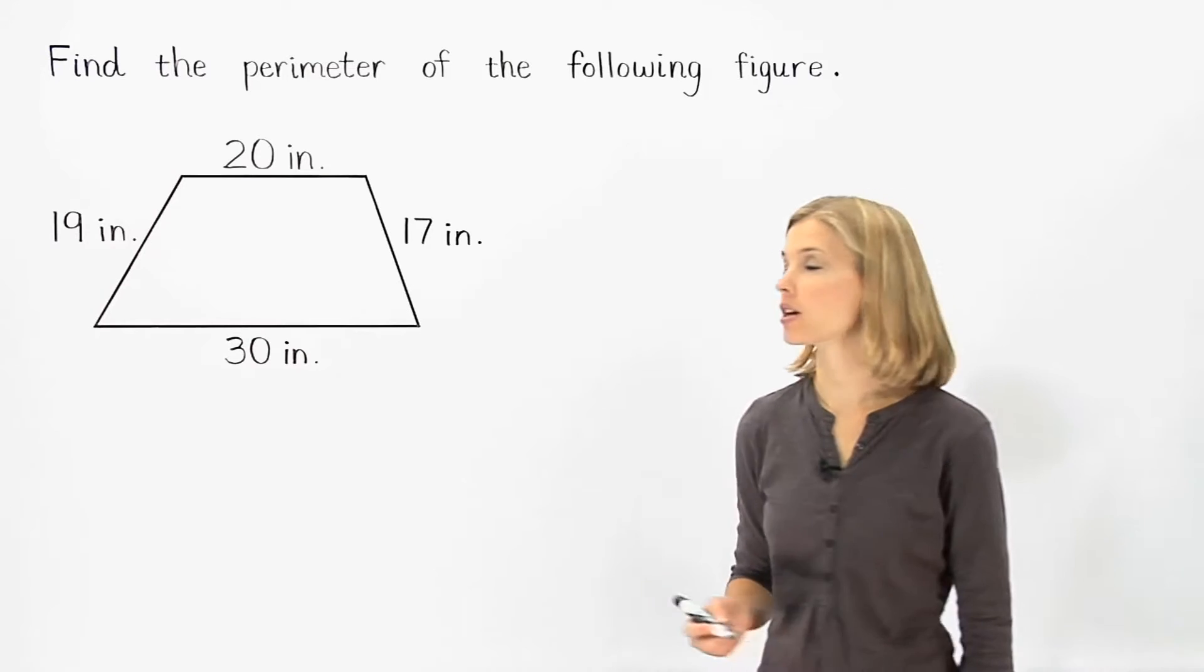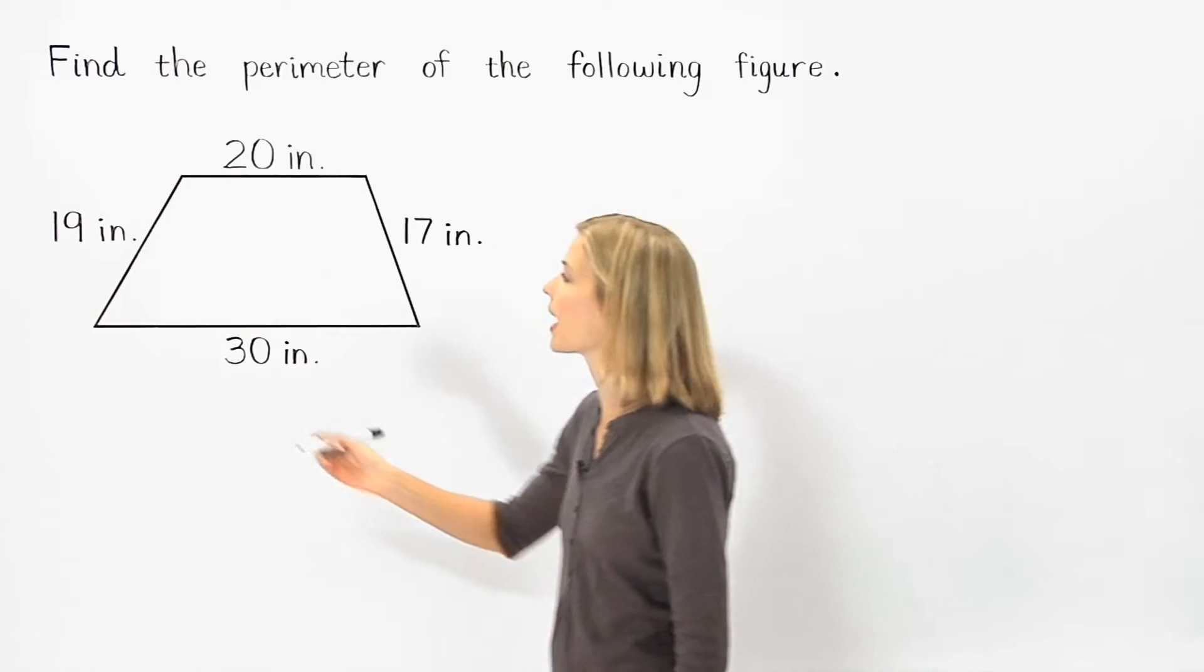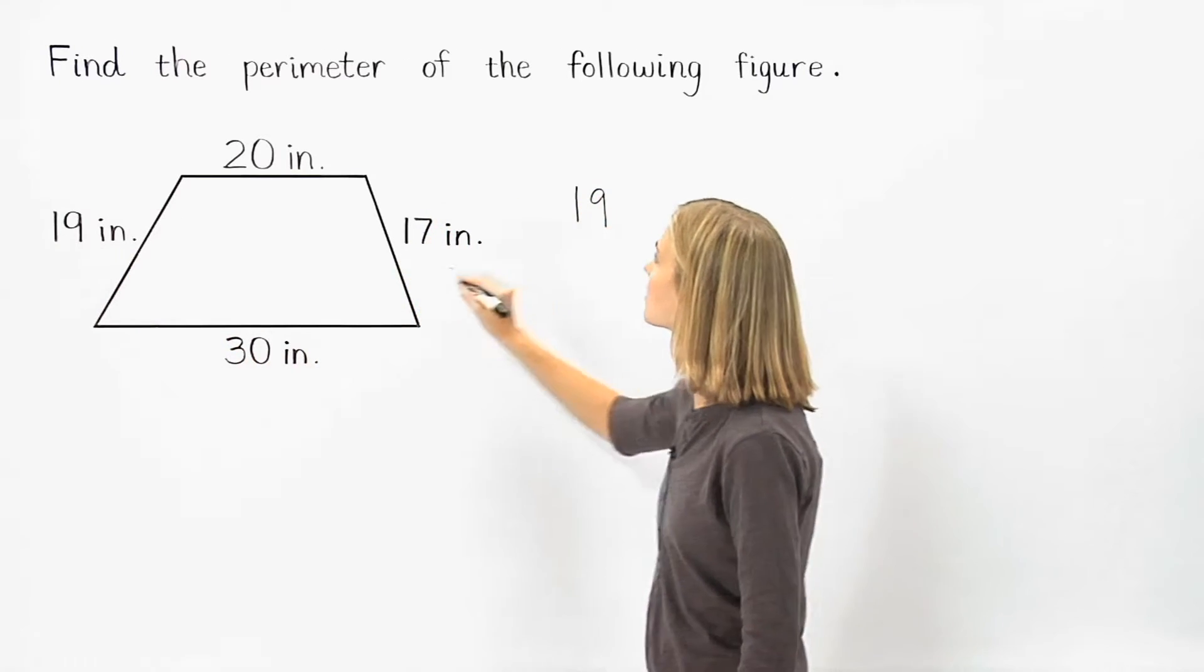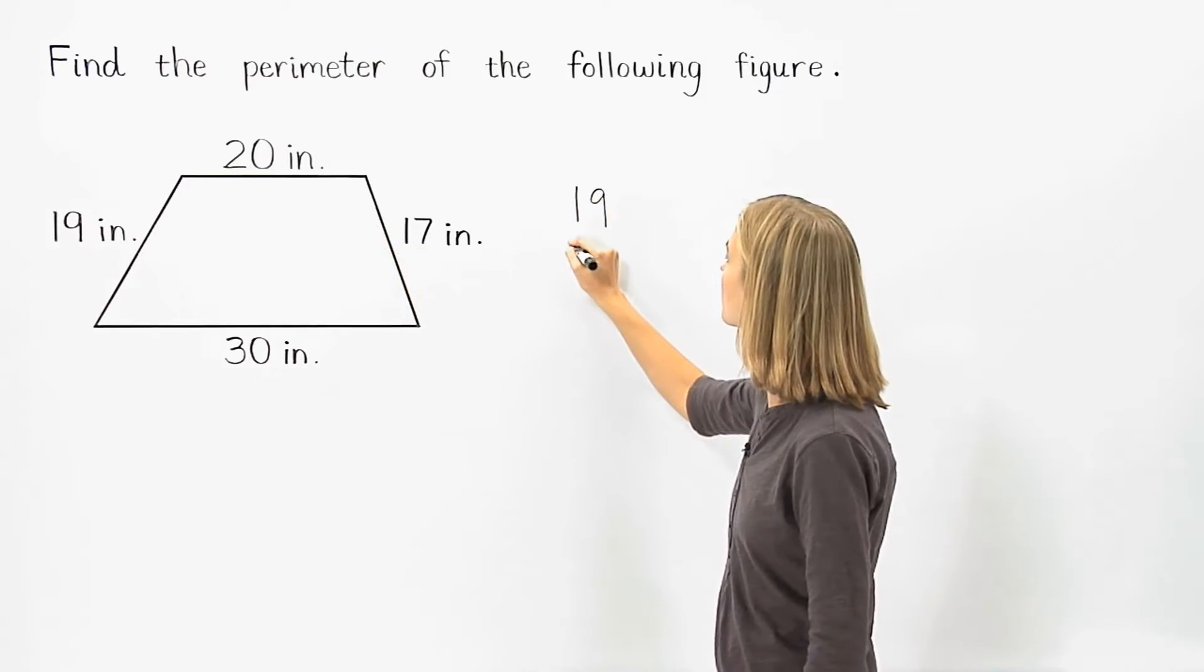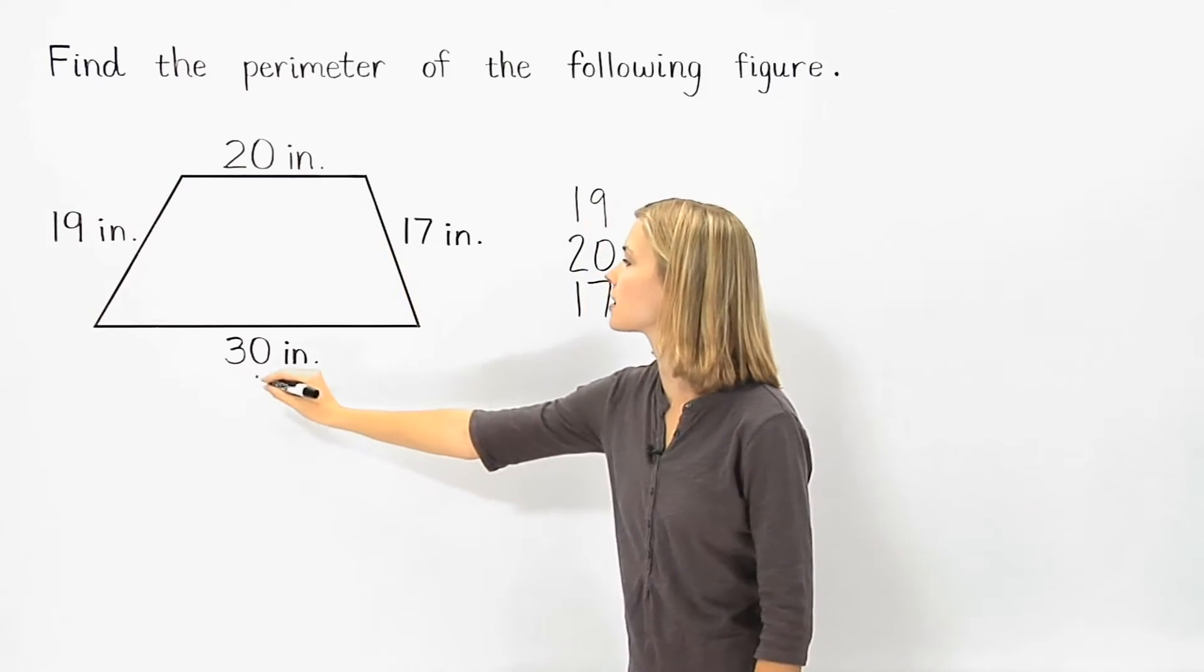So to find the perimeter of the figure shown, we simply add the lengths of the sides. So we have 19 plus 20 plus 17 plus 30.